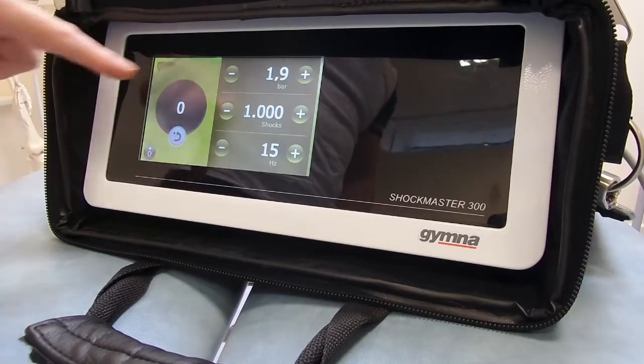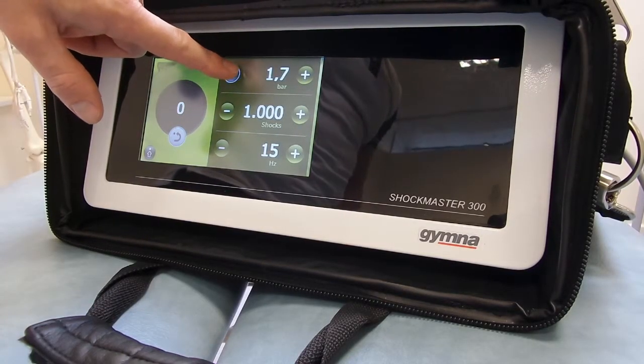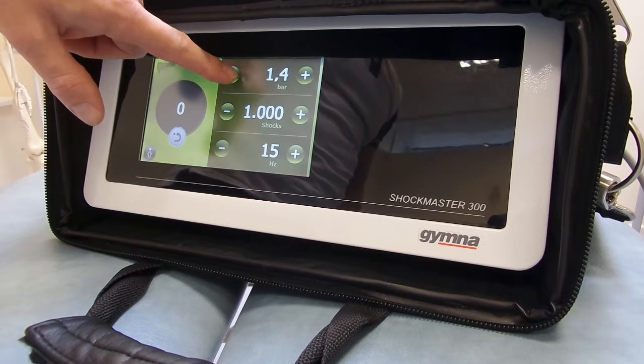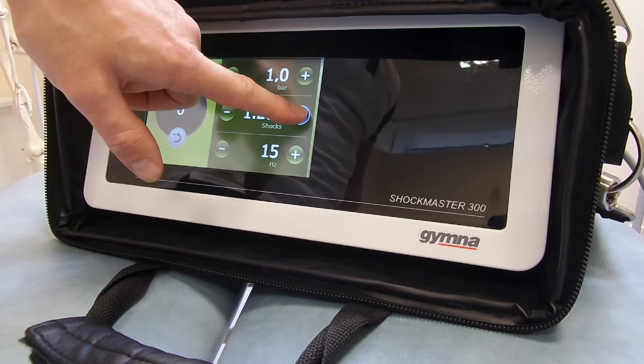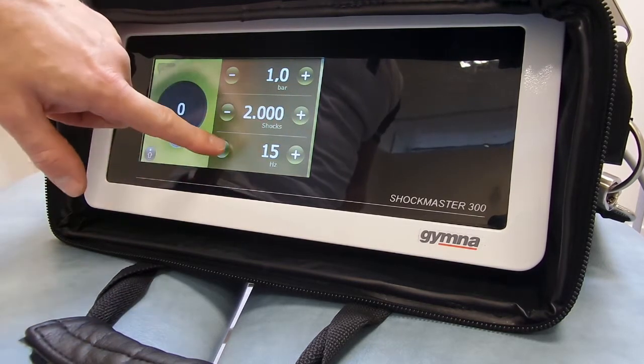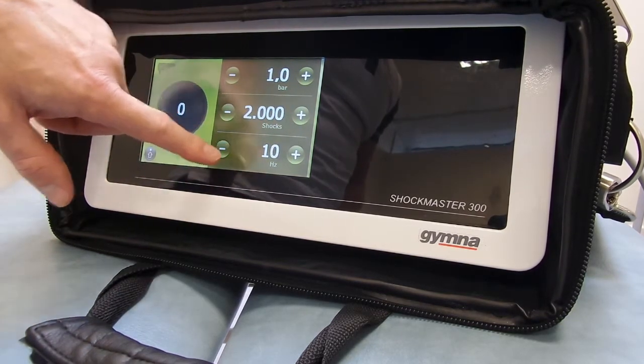The Gymna is an air compressed machine not a magnetic electron machine and so its settings are in bar. Going down to one bar which is the equivalent of 60 millijoules. Do 2,000 shocks again at 10 Hertz.